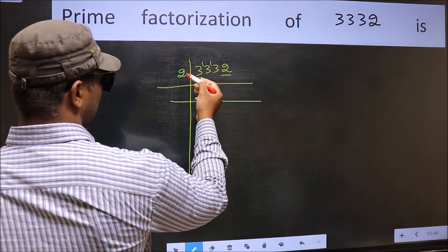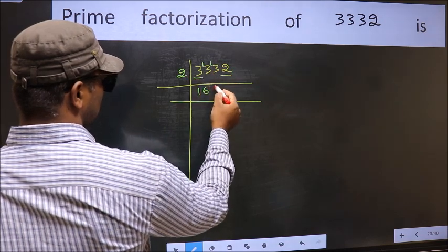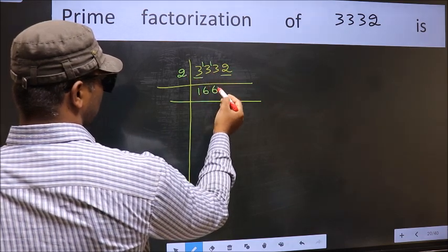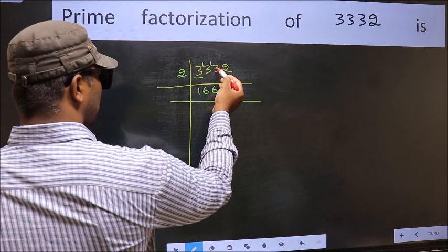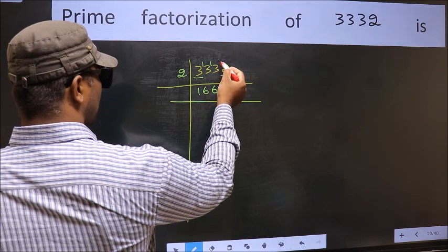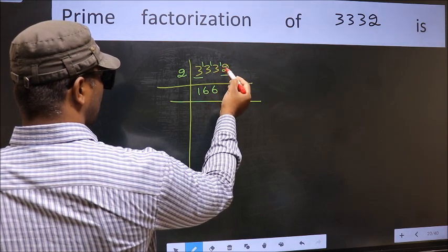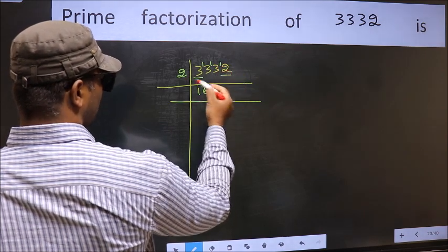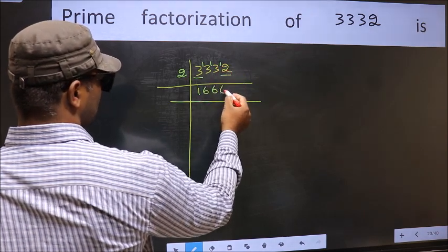A number close to 13 in the 2 times table is 2 times 6, which is 12. 13 minus 12 is 1, carried forward: 12. When do we get 12 in the 2 times table? 2 times 6 is 12.